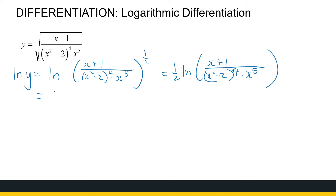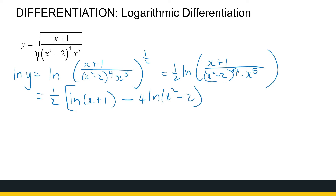I'll do the next two steps in one — pay attention. The one half applies to everything inside the brackets. The numerator gives ln(x + 1). Since the denominator has two factors, I subtract both: minus 4·ln(x² − 2), where I brought the exponent 4 to the front, minus 5·ln(x).